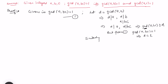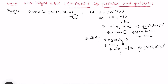Similarly, let d' be the gcd(a, c). Then d' divides a and d' divides c. Again d' divides a and d' divides bc (as a multiple of c). This again gives the fact that gcd(a, bc) is greater than or equal to d'. But from the given condition gcd(a, bc) = 1, so this forces d' = 1. So in both cases the result is proved.